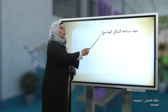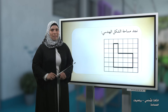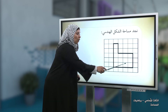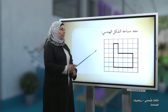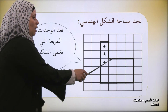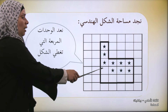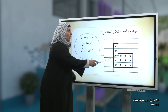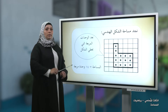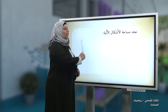هيا بنا نطبق ذلك ونحل هذا السؤال: نجد مساحة الشكل الهندسي المرسوم على شبكة المربعات. نقوم بعد الوحدات المربعة التي تغطي الشكل: واحد، اثنان، ثلاثة، أربعة، خمسة، ستة، سبعة، ثمانية، تسعة، عشرة، أحد عشر، اثنا عشر، ثلاثة عشر، أربعة عشر. إذن مساحة هذا الشكل الهندسي أربعة عشر وحدة مربعة.